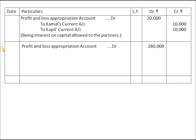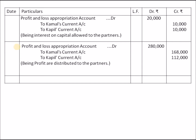Then Profit and Loss Appropriation Account Debit Rs.2,80,000 to Partners' Current Accounts for profit distribution — Simran got Rs.1,68,000 and Rima got Rs.1,12,000 as profit sharing. Total is Rs.3,00,000. Question complete.